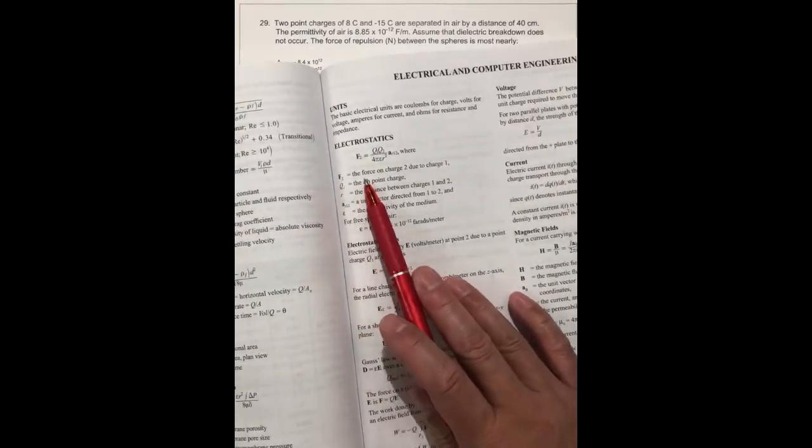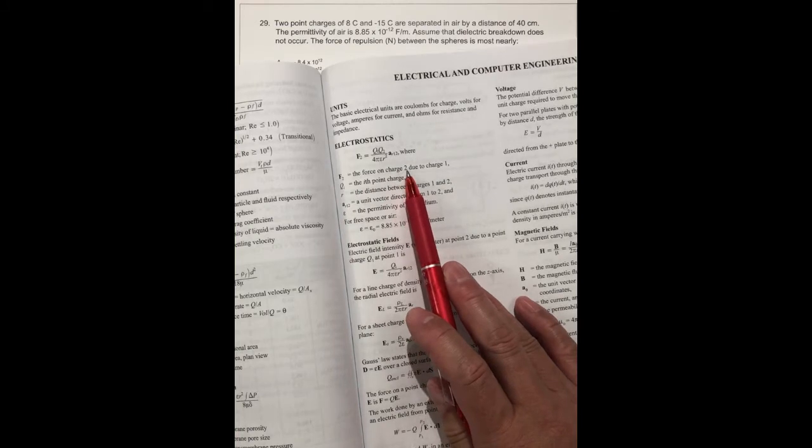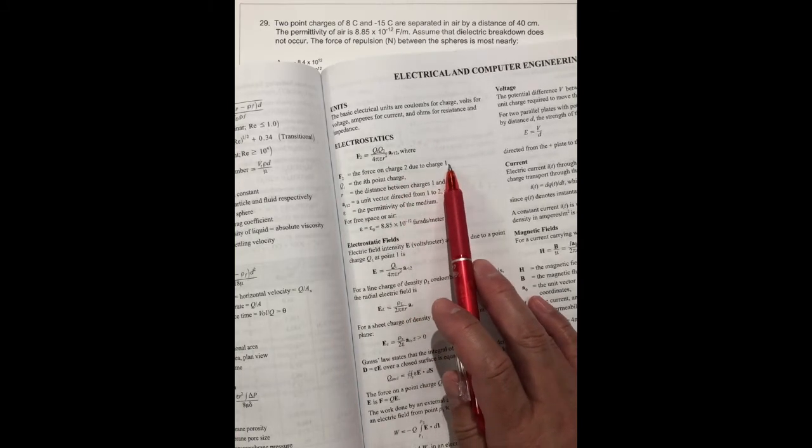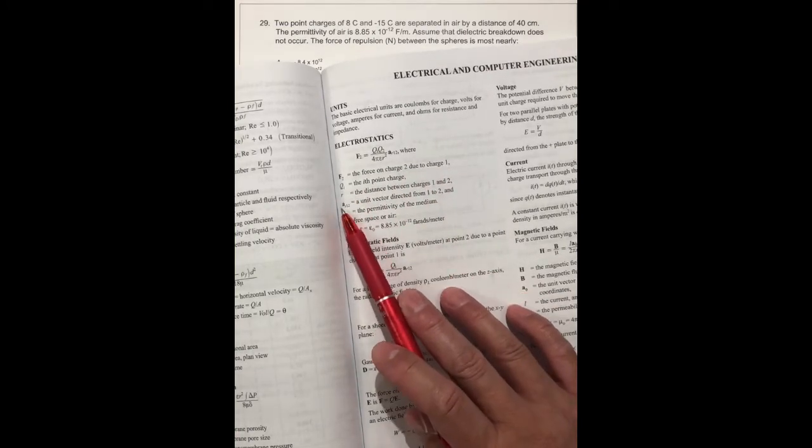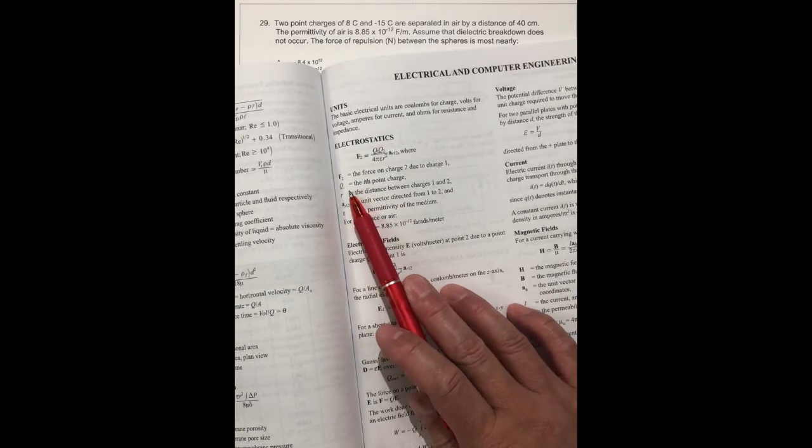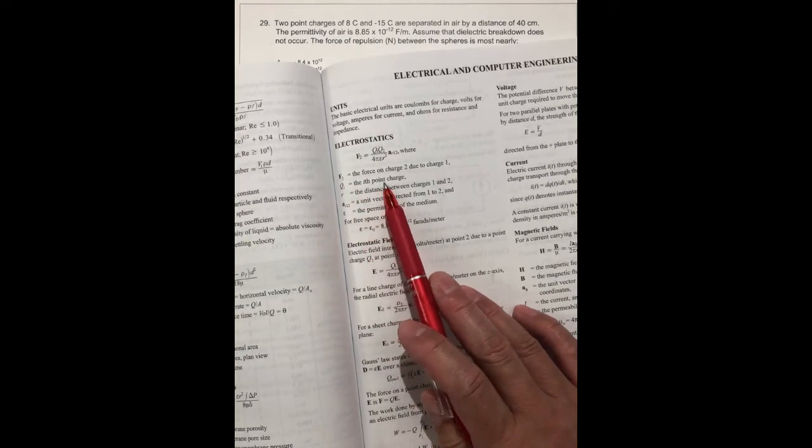The F2 is the force on charge 2 due to charge 1. Q1 and Q2 are the point charges.